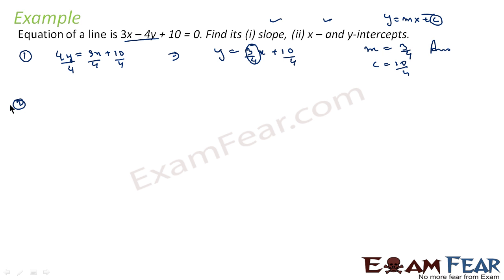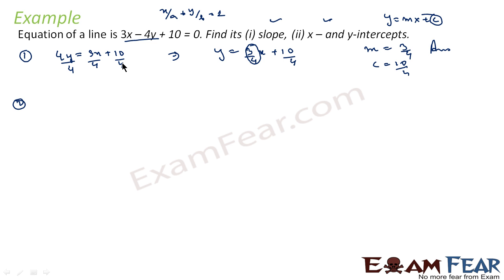For the second part, we are asked to write in the intercept form. The intercept form we know is x/a + y/b = 1. So if we can write this equation in the form x/a + y/b = 1, we are done.